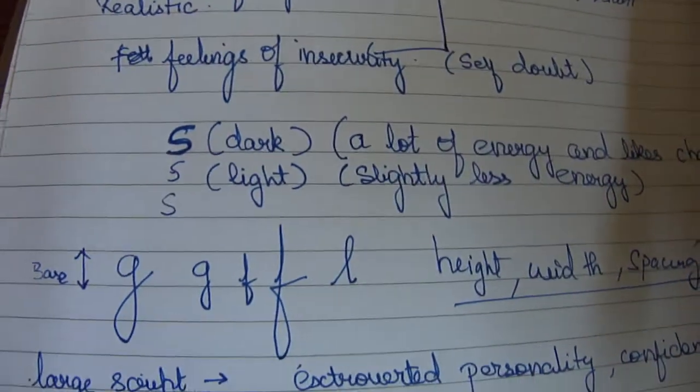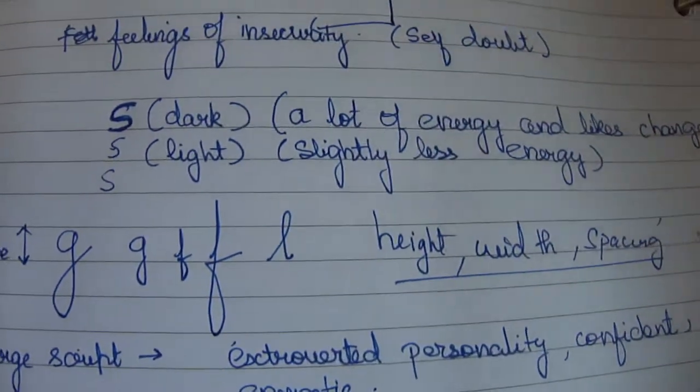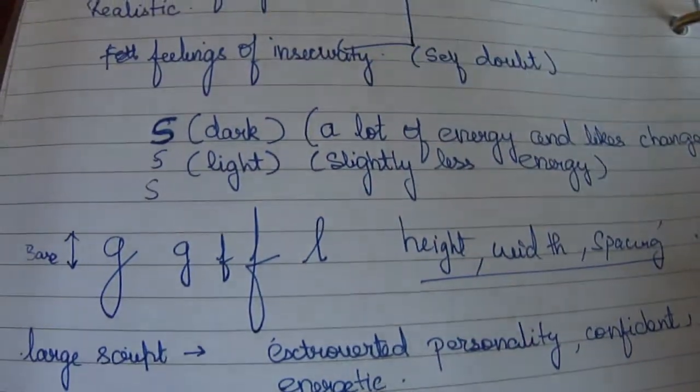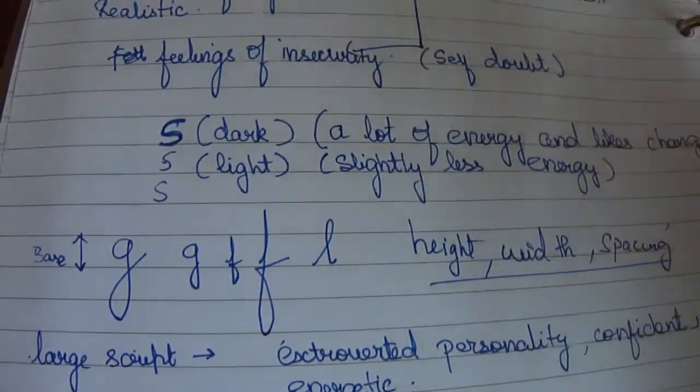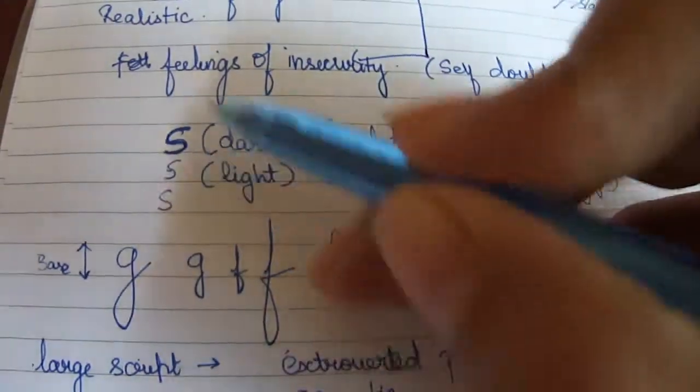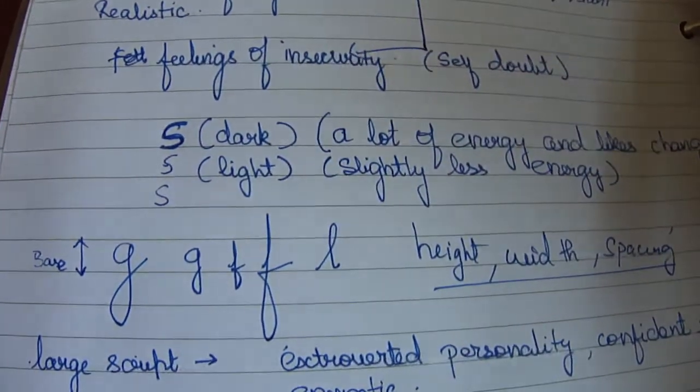It can mean that the person has a lot of energy and likes adventure and changes. A dynamic environment is what the person is looking for. If the handwriting is very dark, you can say that the person has abundance of energy.